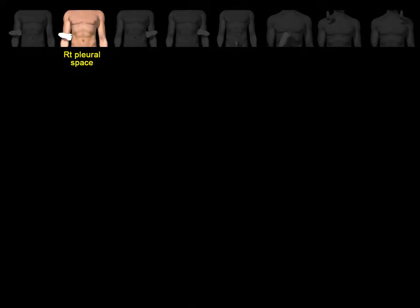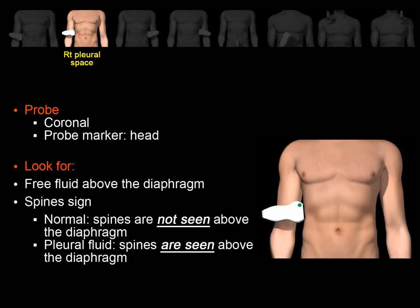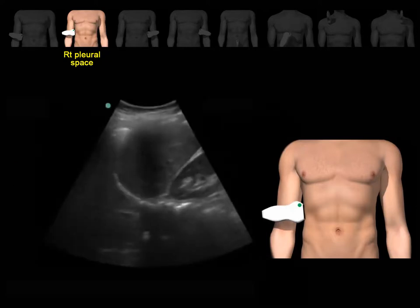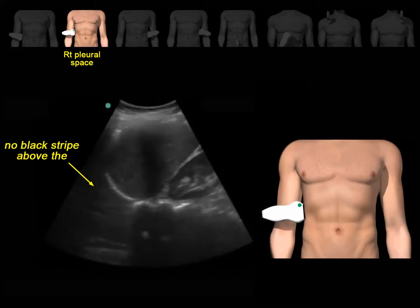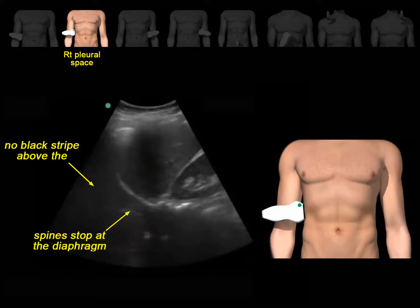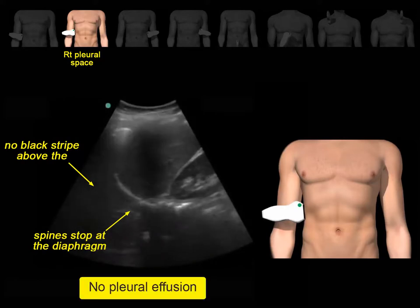The right pleural space. Since the probe is already on the right side, just slide it upward. Keep the probe in the coronal orientation with the probe marker towards the patient's head. Look for an echoic black stripe above the diaphragm. Another way to tell if there is free fluid in the pleural space is by looking at the spine sign. In a normal patient, spines are not seen above the diaphragm because air in the lung does not transmit sound waves. If there is free fluid in the pleural space, spines will be seen above the diaphragm. In a normal patient, we don't see any echoic black stripe above the diaphragm, and the spines stop exactly at the level of the diaphragm.